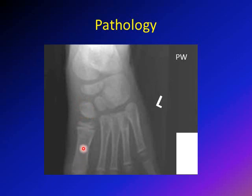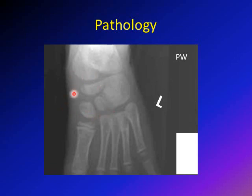This is the first ray here — the first metatarsal. The first metatarsal is articulated with the medial cuneiform, and then this is the navicular. The navicular bone is the last bone to ossify in the foot, ossifying around one and a half years in girls and about two and a half to three years old in boys.